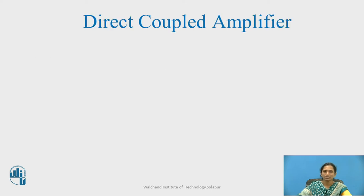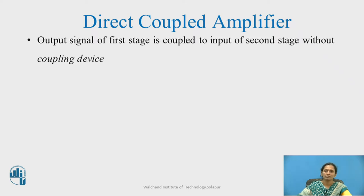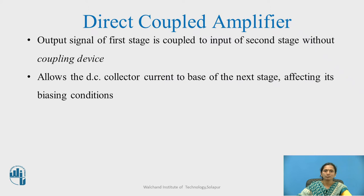Why is there a need for a direct coupled amplifier? As the name suggests, there is no coupling element — we are directly providing the output of the first stage to the input of the next stage. Therefore, there is no coupling device, which allows DC current to reach the base of the next stage.